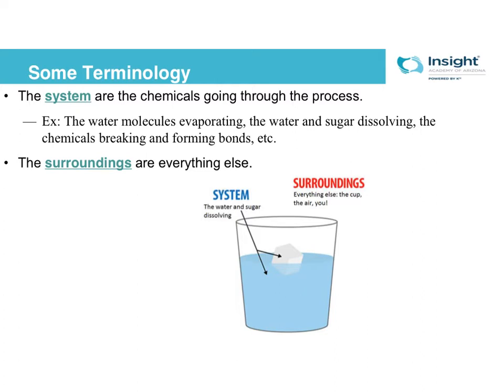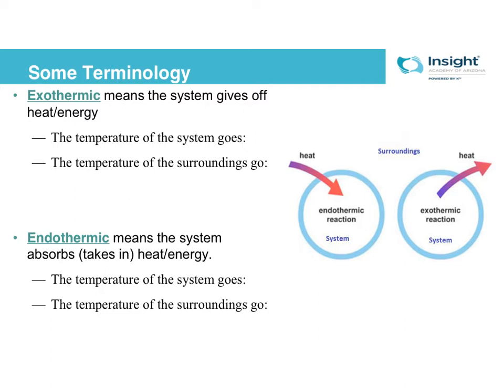A couple of other important terms: we talked about these back in Unit 1 of Chemistry A. Exothermic means that your system gives off heat or energy. If you break that word down — 'exo,' like the word 'exit,' means 'leaves,' and 'therm,' like a thermal blanket, means 'heat.' So exothermic means that the heat leaves the system, it's given off. Logically, if the heat is leaving the system, what do you think is going to happen to the temperature of the system if it's losing heat?